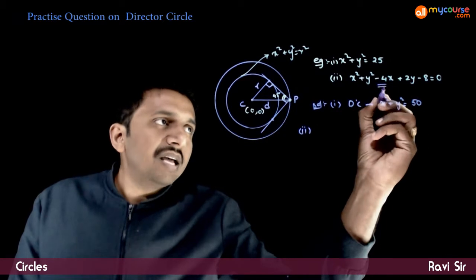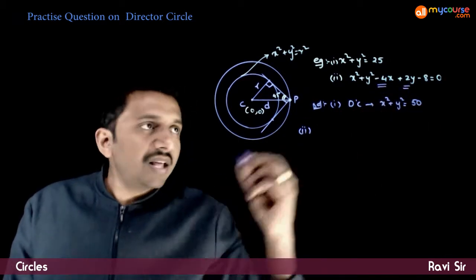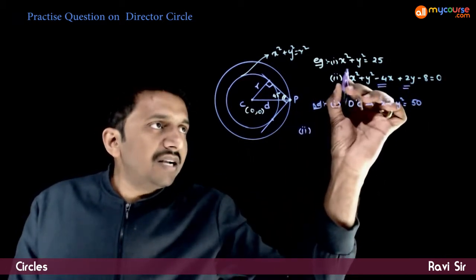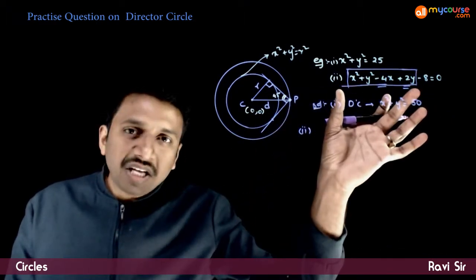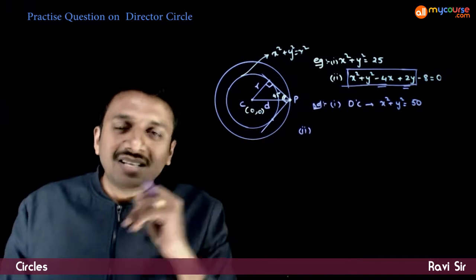What is the center for this? 2 and minus 1. As we know, the center of the circle depends on this part. If this part does not change, the center does not change.